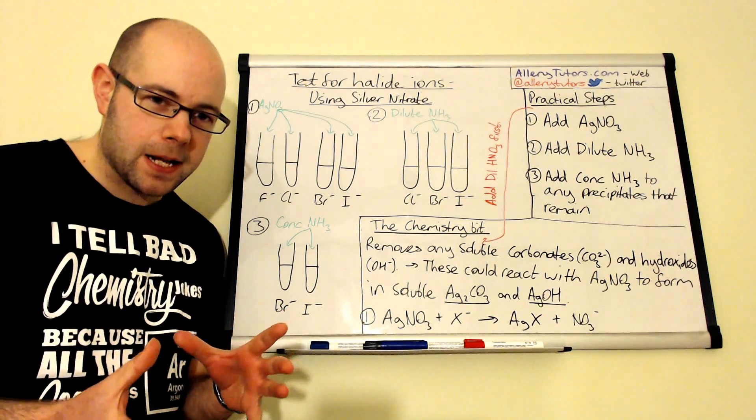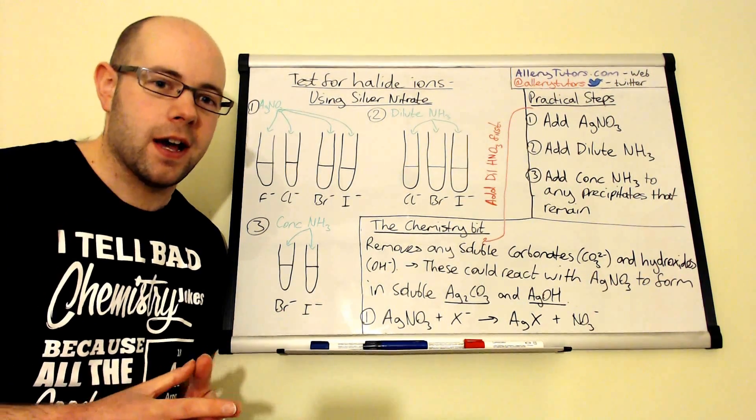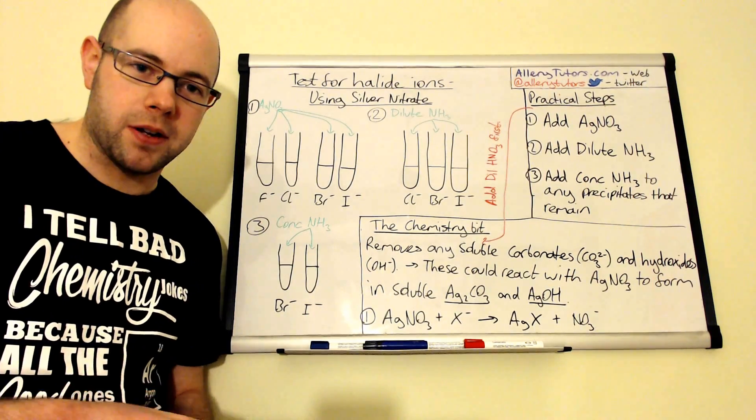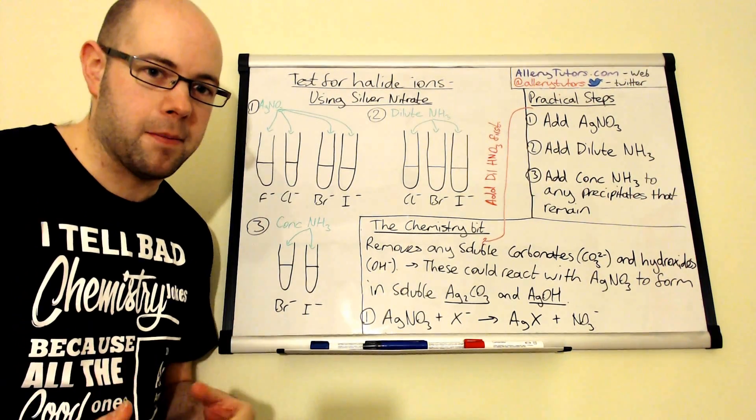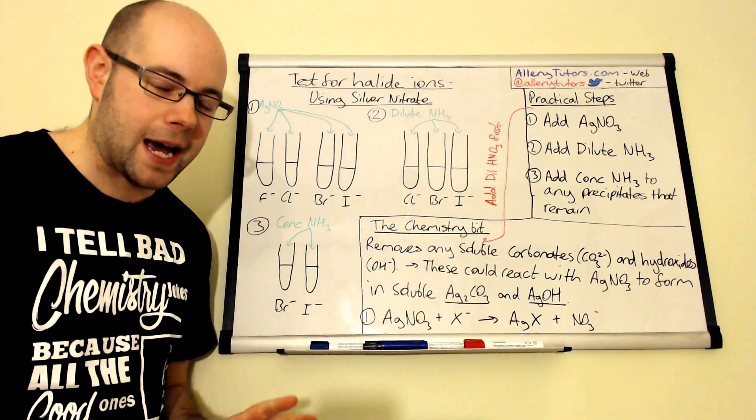These halogens only exist in solution. You can't get a pot of it and unscrew it and have Br minus ions in there. It just doesn't happen like that.